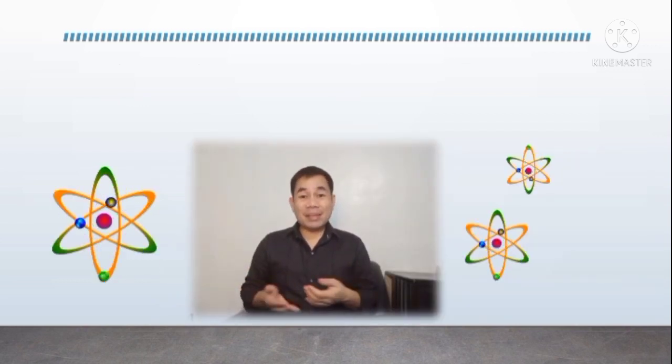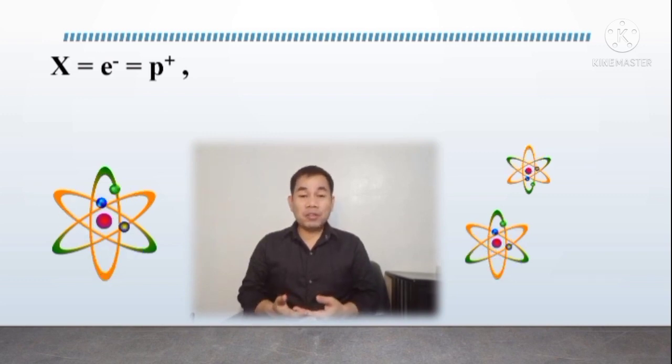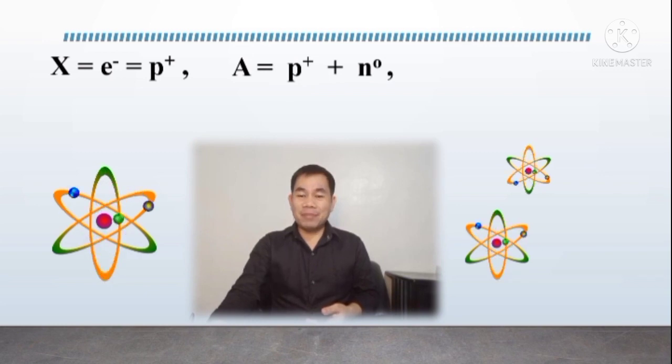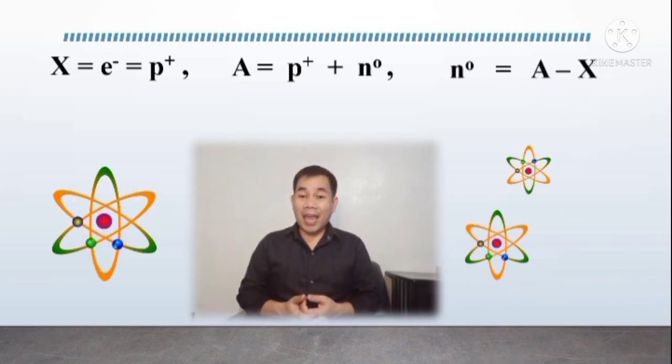This time, we'll be having simple mathematical calculations in determining the number of proton, electron, and neutron of an unknown atom, applying the following equations. X = e and also equal to p, which means that atomic number is equal to electron number and also equal to proton number. We also have a = p + n, which means that atomic mass is equal to the sum of proton and neutron. And lastly, we have n = a - X, which means that neutron number is equal to the difference between the atomic mass and atomic number. So, are you ready guys?